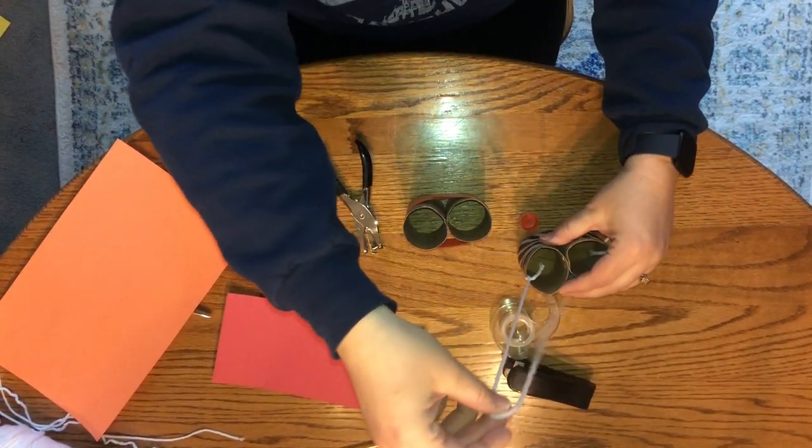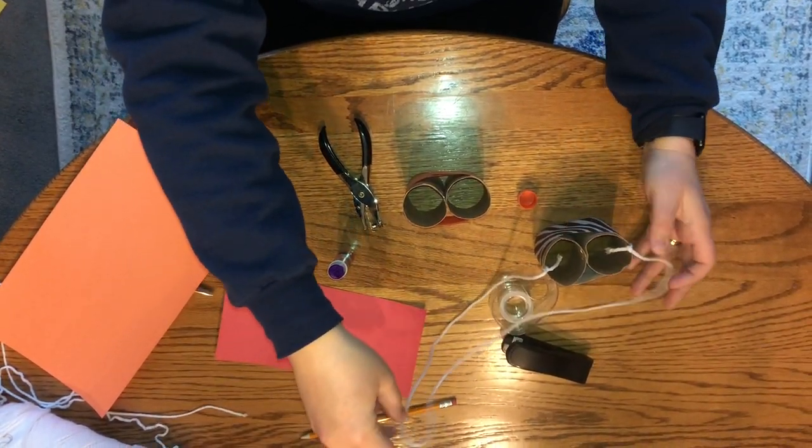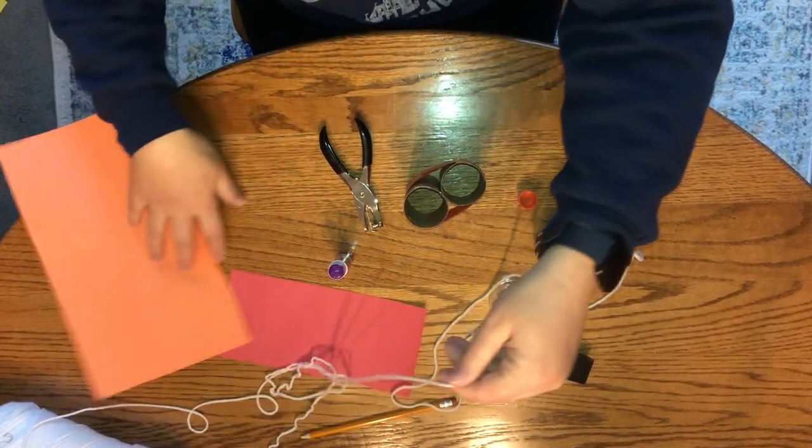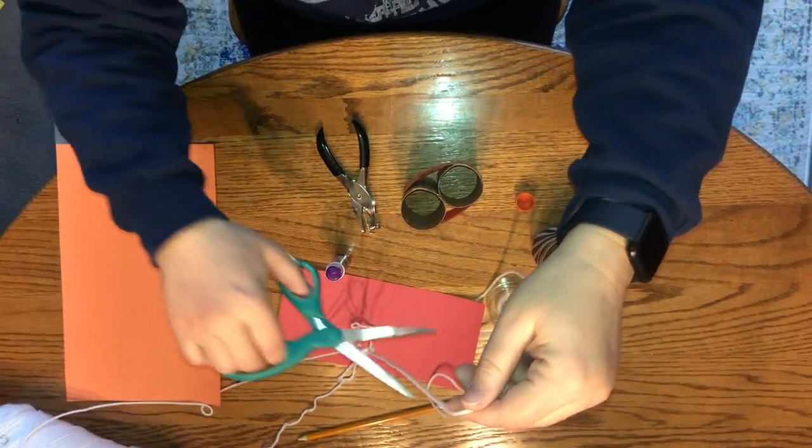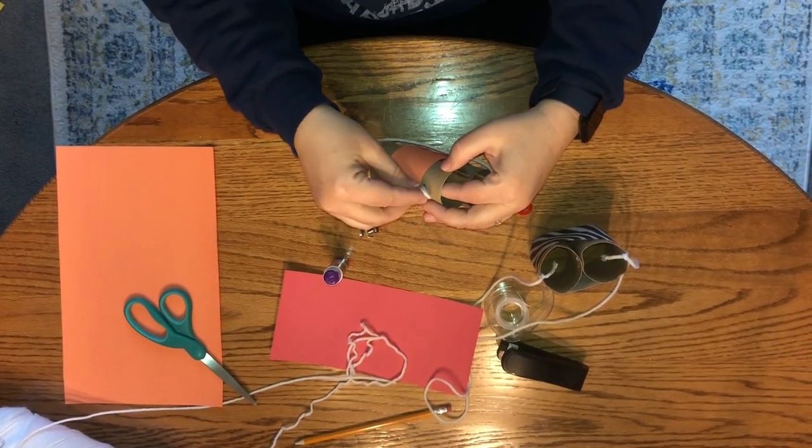And we can go ahead and cut a piece and then tie it into each of those holes that we punched on the side of our toilet paper tubes.